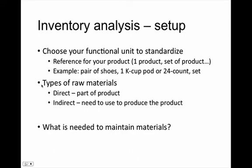There are a few other things to keep in mind when talking about the inventory analysis, and that's types of raw materials. Direct materials are actually part of your product — something you actually see when you hold the product, or at least know is there. Indirect aspects of raw materials are things we need to use to produce the product — they may not be in our hand when we use the product, but they're needed to produce it. Another aspect is what is needed to maintain the direct or indirect materials, which can itself be an indirect material.